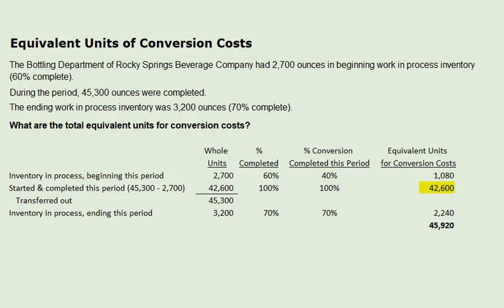The number of units completed and transferred out to the next department is 45,300. That is known by taking the beginning inventory in process, 2,700, plus the started and completed this period, 42,600, to get 45,300. This is the same number given in the problem, which states that during the period, 45,300 ounces were completed and transferred out.